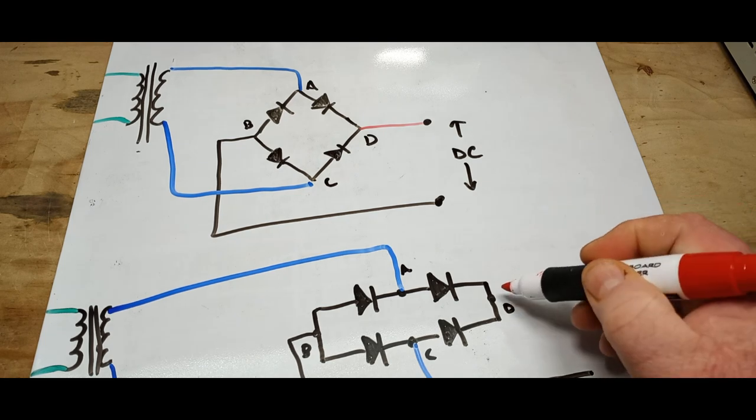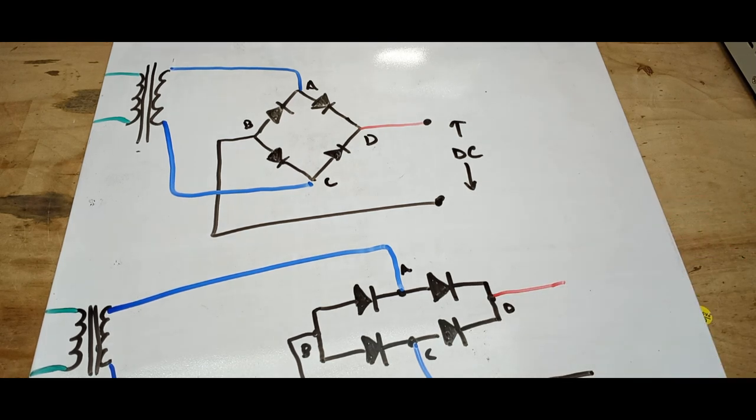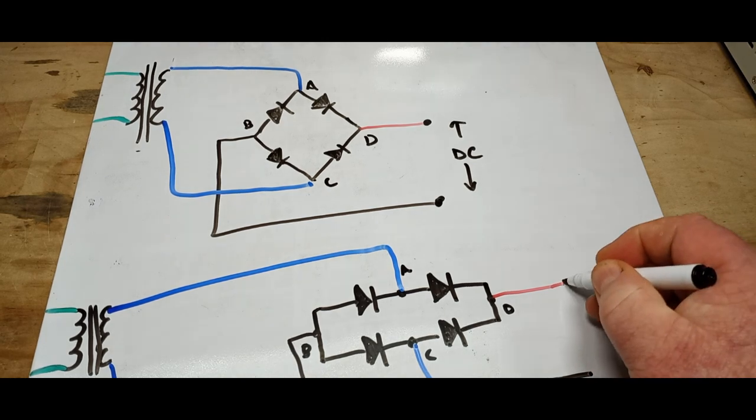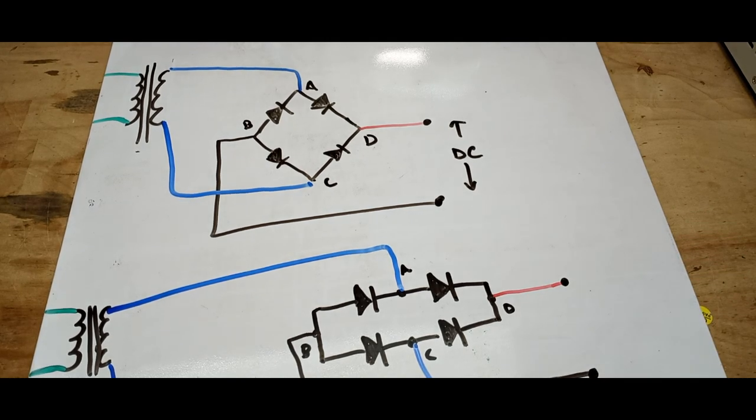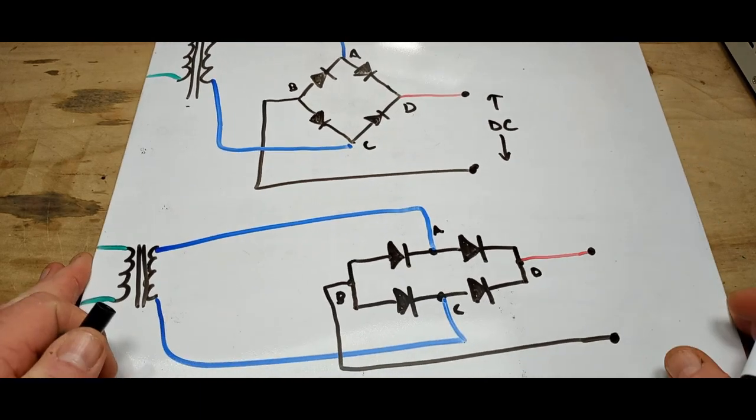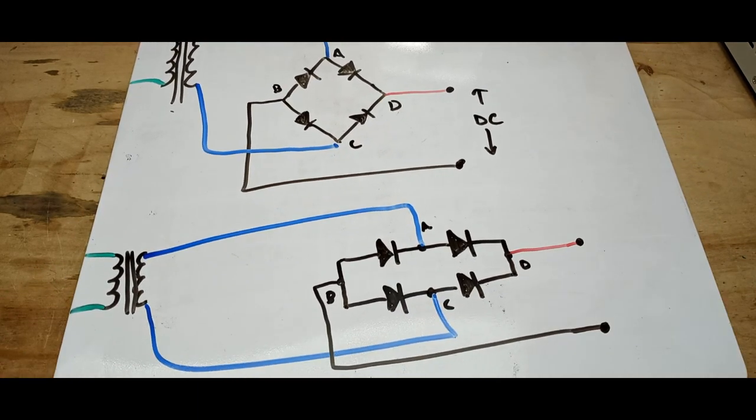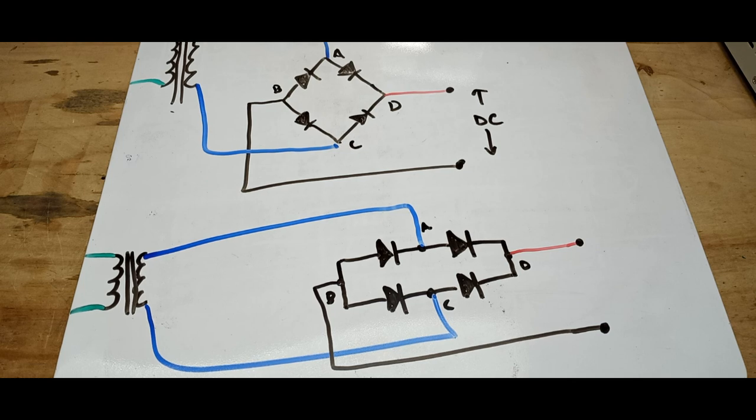And D, which is our DC positive, comes out here like that. And now what we have, up here so you can see it all, is a more linear, more breadboard-friendly layout and it will all work exactly the same.